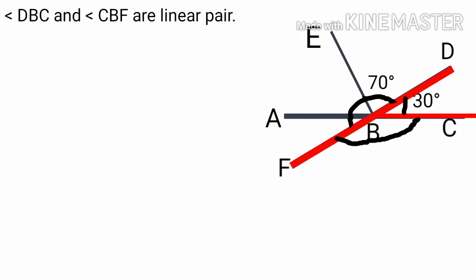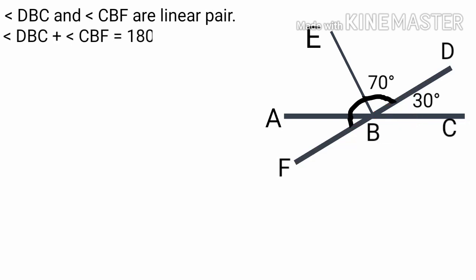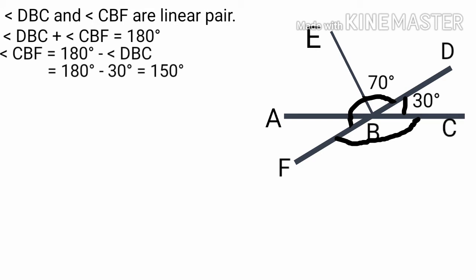CB is a line drawn to line FD. Therefore angle DBC and angle CBF are a linear pair. Therefore angle DBC plus angle CBF is equal to 180 degrees. Therefore angle CBF is equal to 180 minus angle DBC, that is equal to 180 minus 30 degrees, that is equal to 150 degrees.